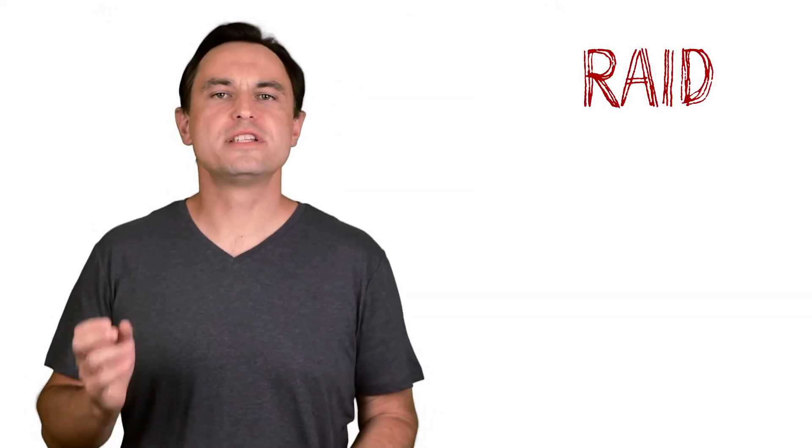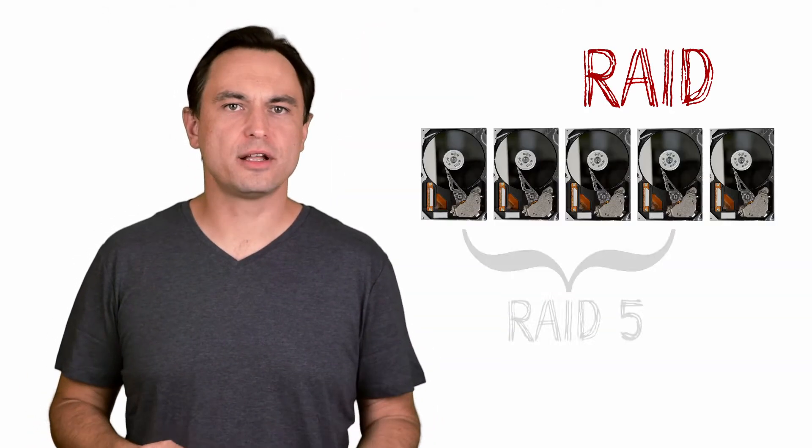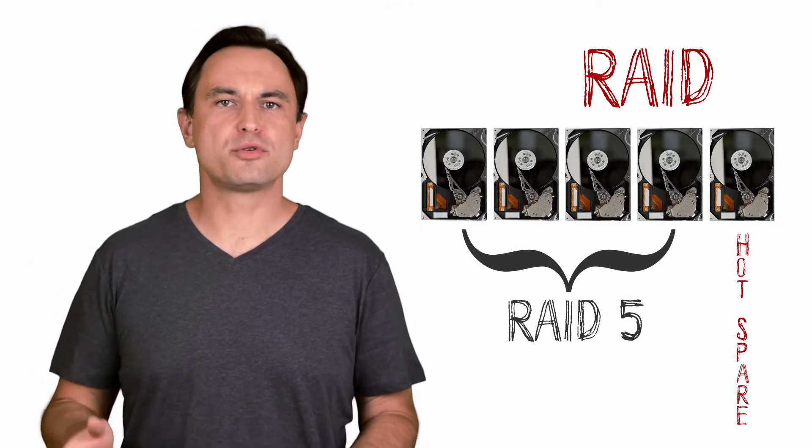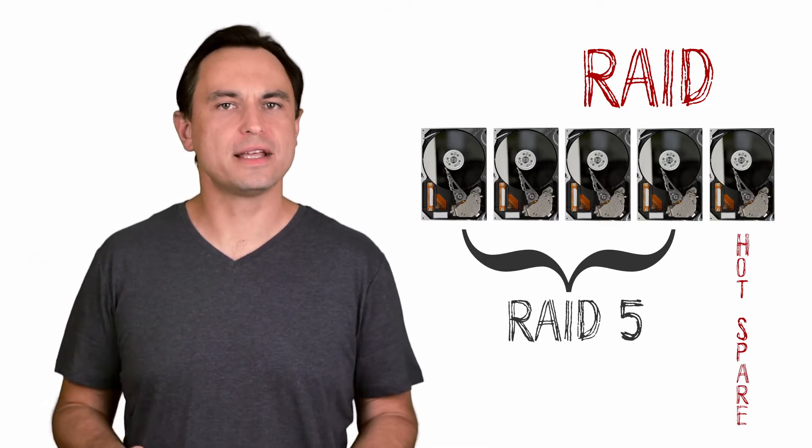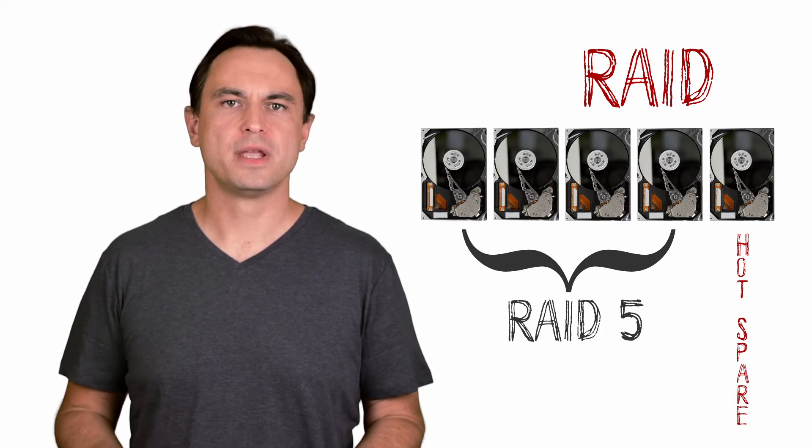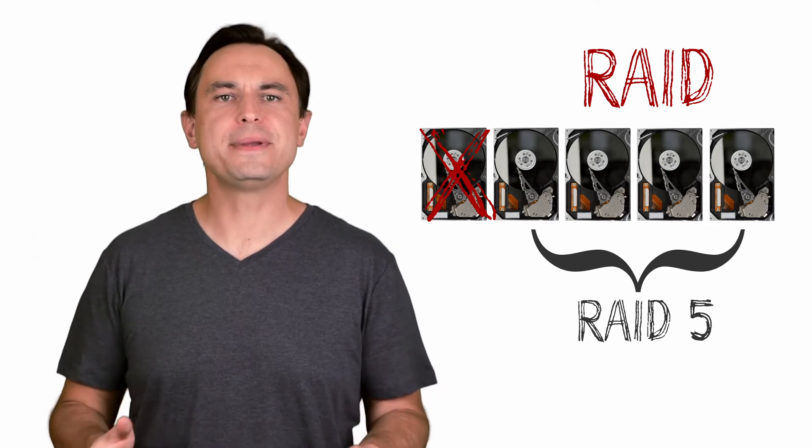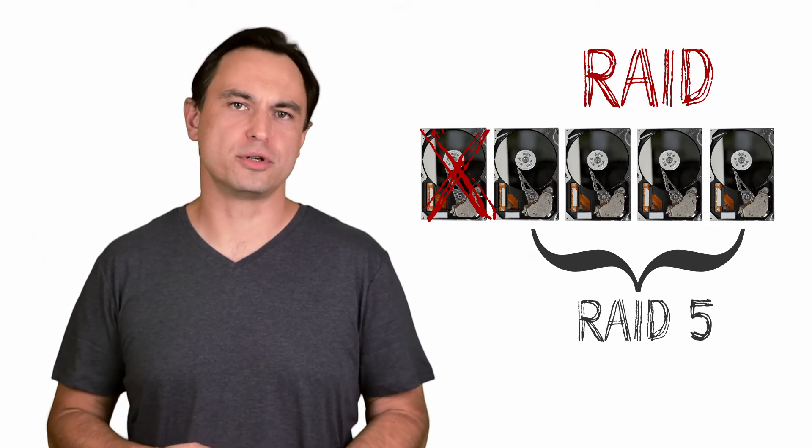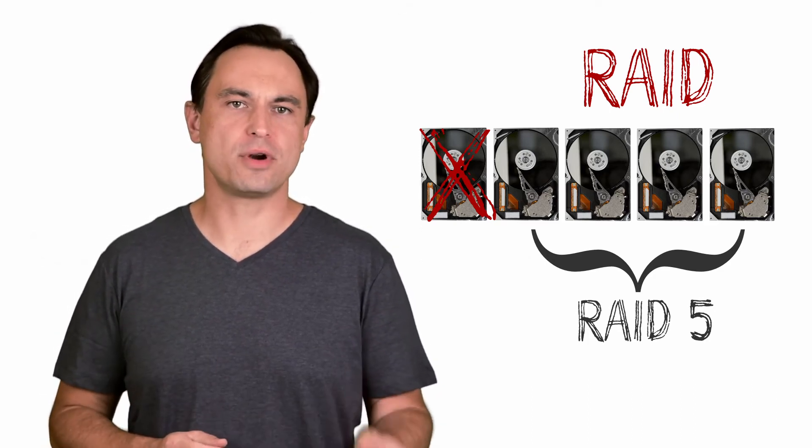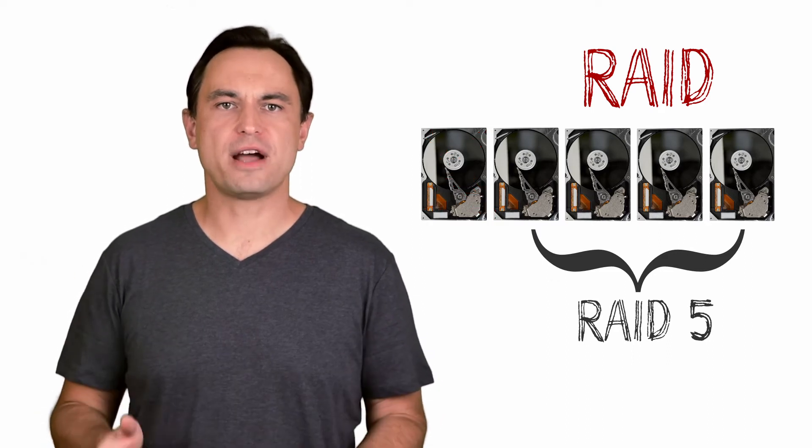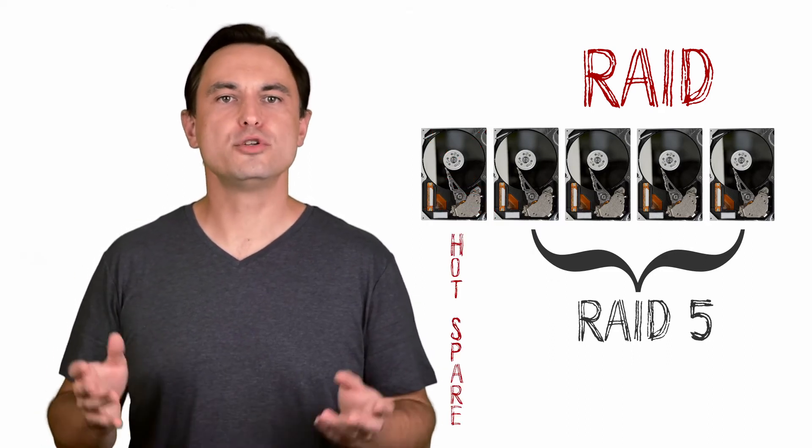One other option typically found in more advanced RAID enclosures is the option of a hotspare. A hotspare is a drive that sits in the enclosure doing nothing while everything is running properly. If a drive does fail, the hotspare turns on and the RAID rebuilds immediately to that drive, keeping the entire RAID fully operational while you arrange for a replacement drive. When the failed drive is replaced, it then becomes the new hotspare.